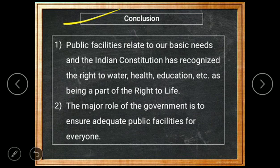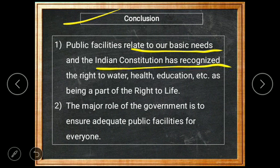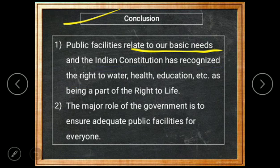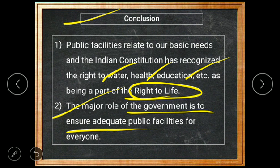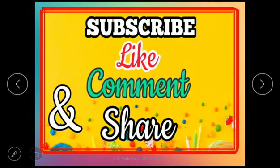In conclusion, public facilities relate to our basic needs — food, clothing, and shelter. The Constitution has recognized the right to water, health, and education as part of the right to life. The major role of the government is to ensure adequate public facilities for everyone and to see that they reach all people. Thank you all, take care of your studies, and we'll meet in the next video for the next chapter.